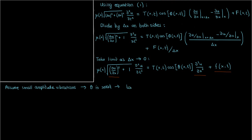Now when theta is small, tan theta, or du/dx, will also be small, which means that the square of du/dx will be even smaller. So we can safely cut out this (du/dx)² from the square root term on the left-hand side.